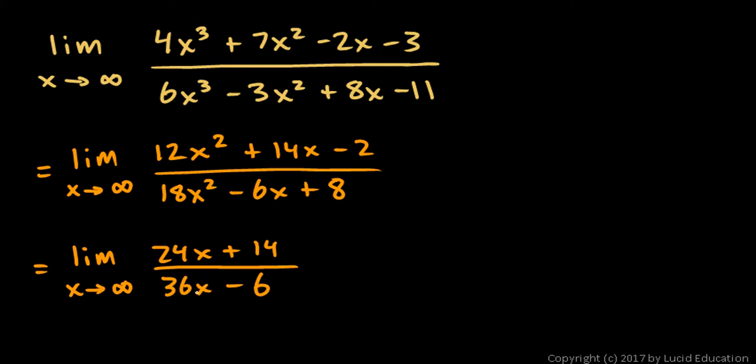That would be 36x minus 6. And as X approaches infinity, both of those approach infinity. So we can take the derivative one more time. The limit as X approaches infinity of 24 over 36. And that simplifies. There's no X there. So as X approaches infinity, that just remains 24 over 36, which simplifies to two thirds.